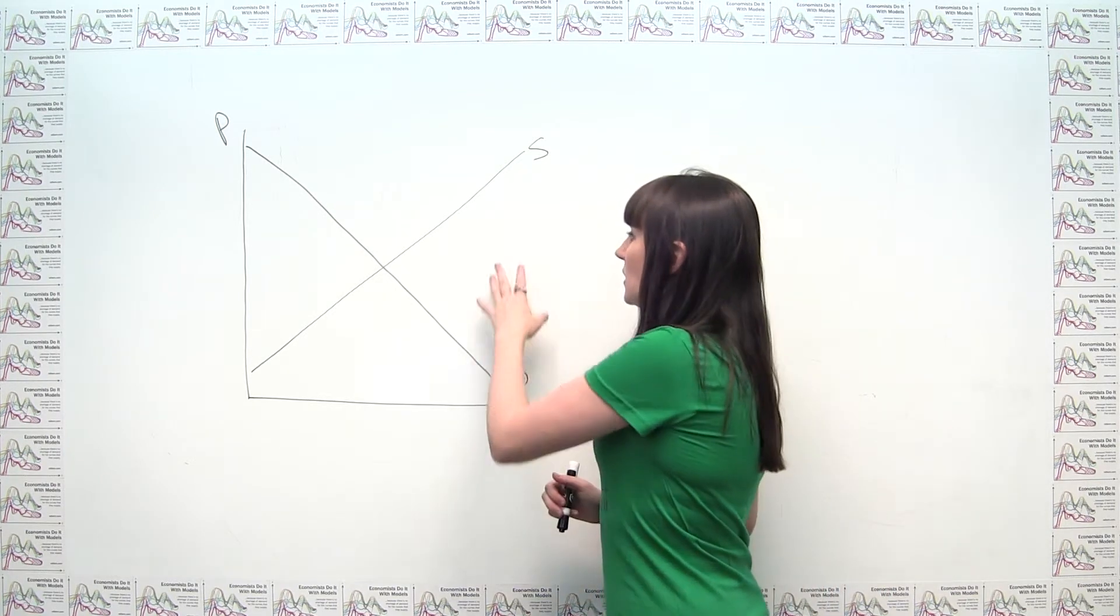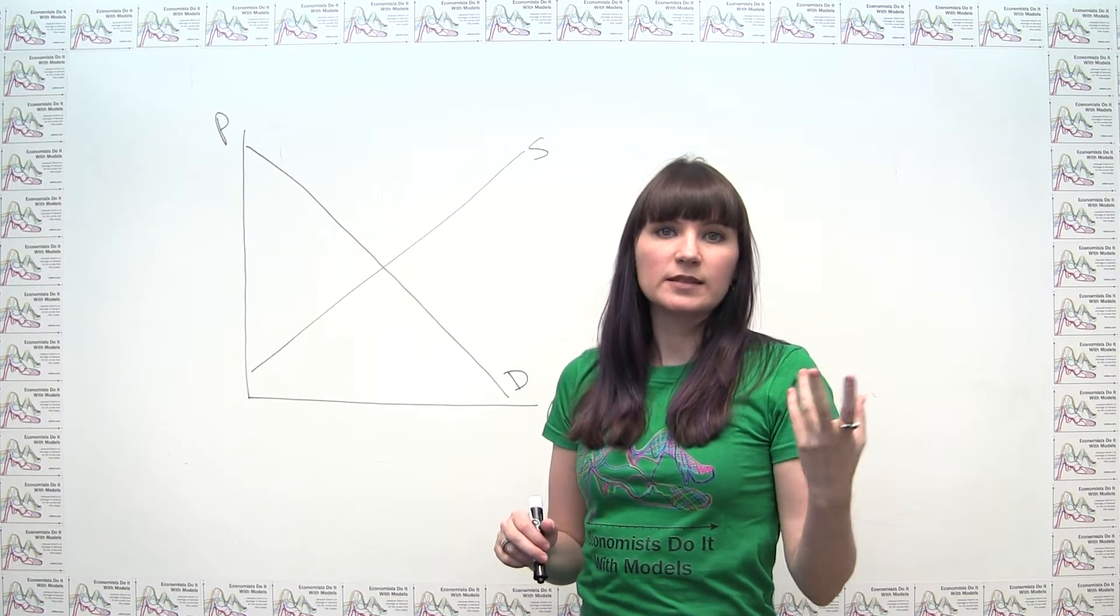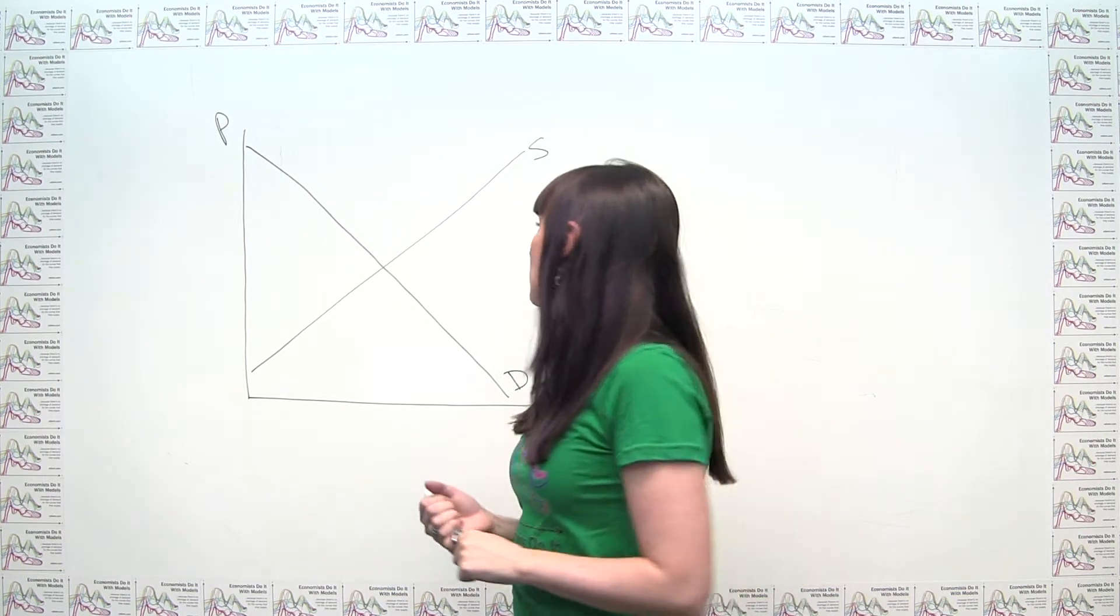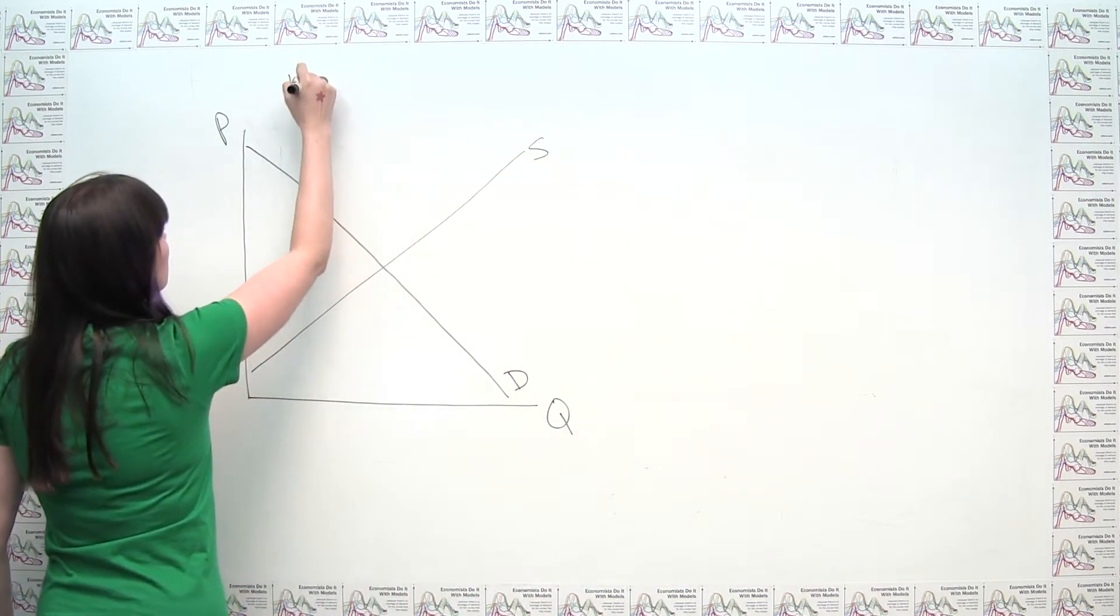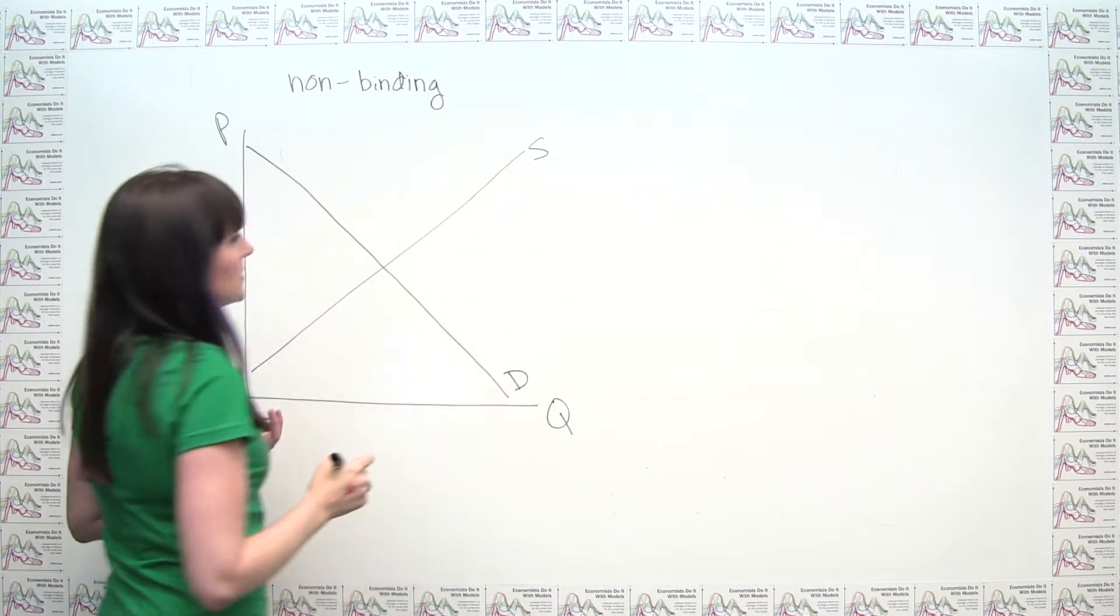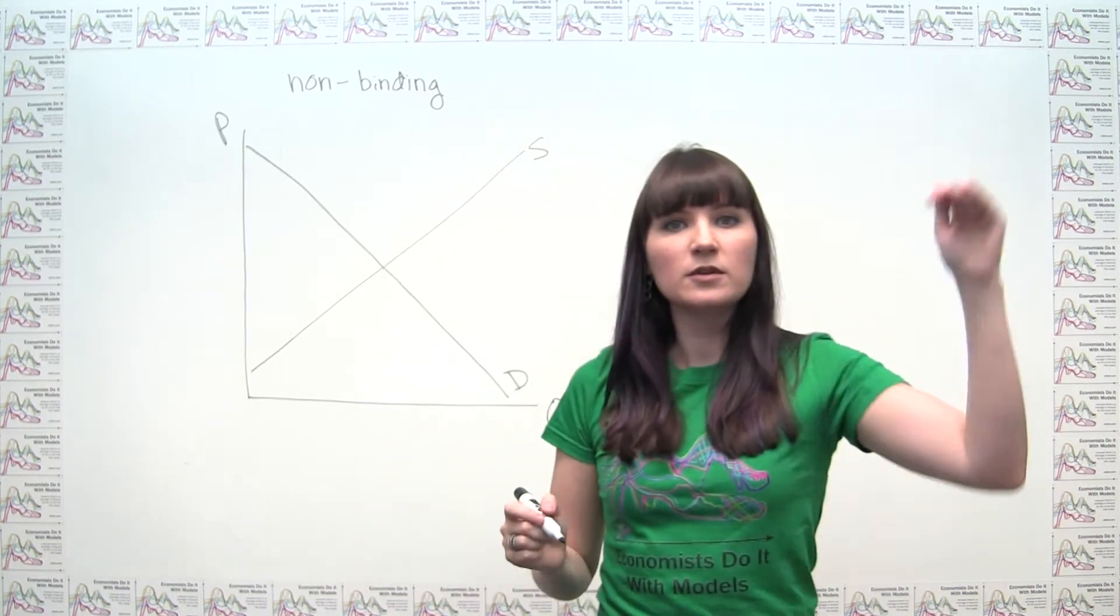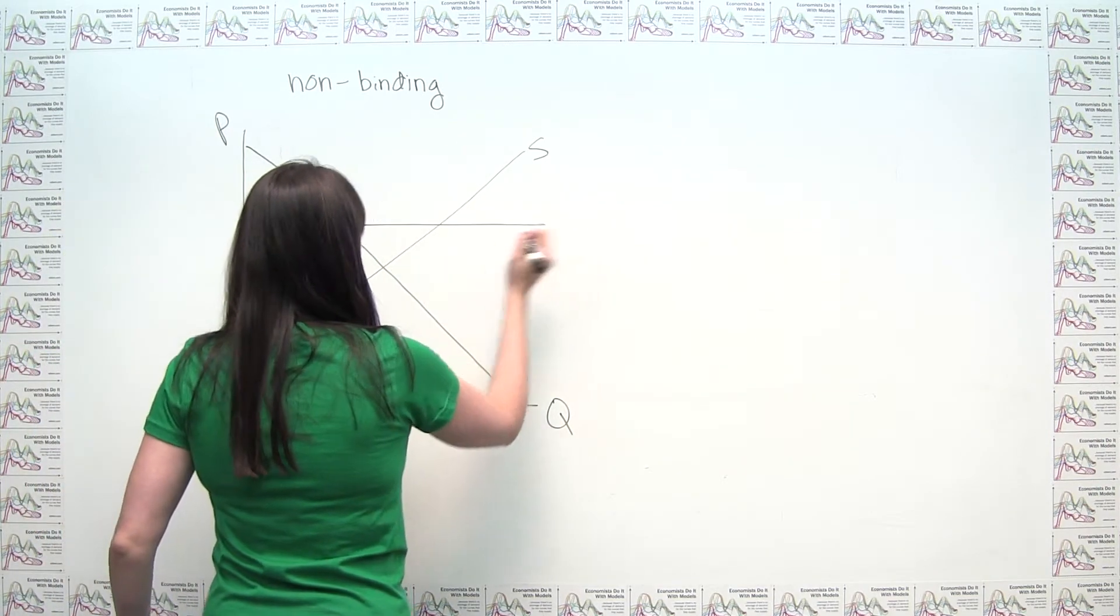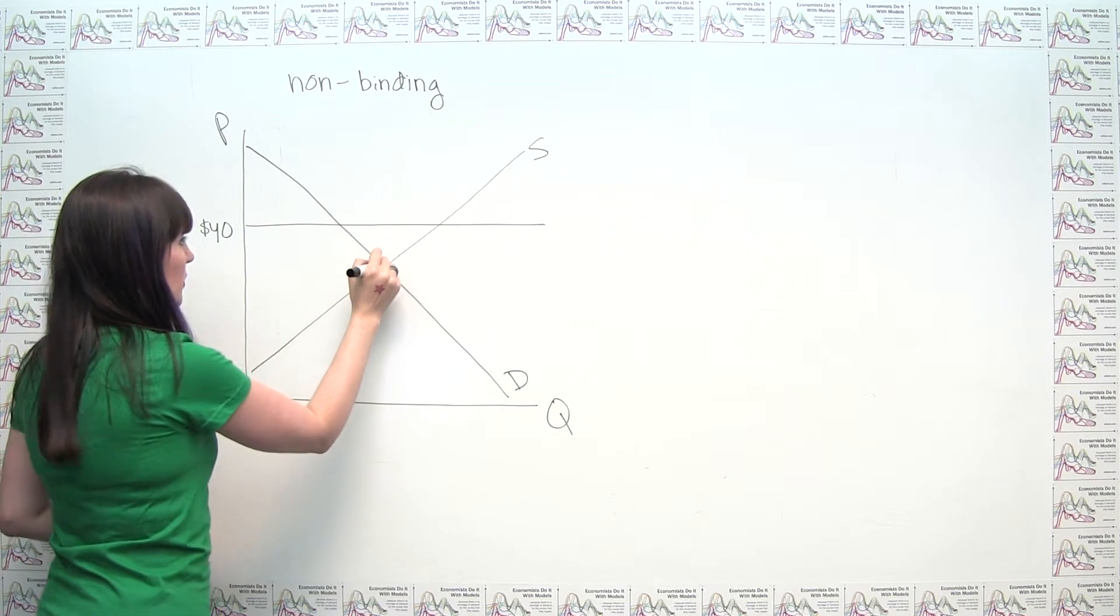So, we can think about on this diagram what effect this price ceiling of $40 is going to have on the market. Now, it's actually important to distinguish between what's called a binding price ceiling and a non-binding price ceiling. So we can discuss each of those in turn. Let's start with the non-binding price ceiling here. Sort of a silly case, but it's worth thinking about. So, let's say we have this non-binding price ceiling. That means that our price ceiling is being set at a price that's above the normal market equilibrium. So that would mean that the price ceiling is being set at something above this equilibrium price, P star here.